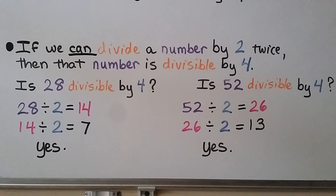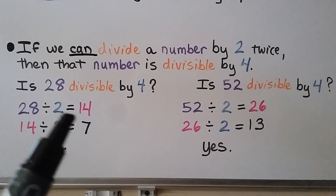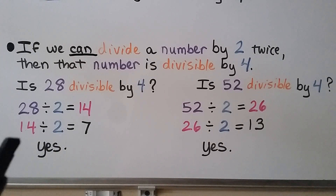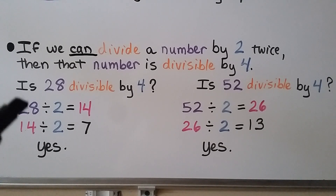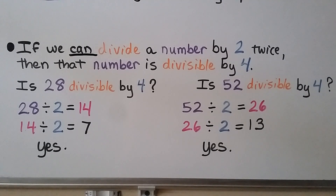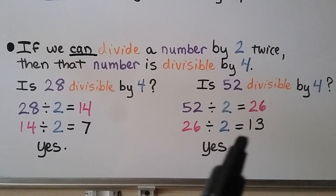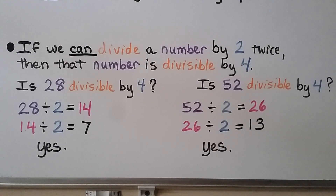If we can divide a number by 2 twice, then that number is divisible by 4. Is 28 divisible by 4? We take 28, divide by 2 to get 14, then divide 14 by 2 to get 7. We were able to divide by 2 twice, so 28 is divisible by 4. Is 52 divisible by 4? We divide by 2 to get 26, then 26 divided by 2 gives 13. So yes, 52 is divisible by 4.